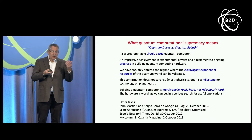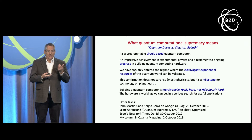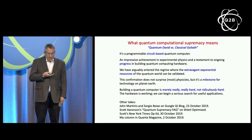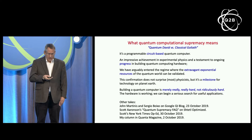While the Sycamore device can generate millions of samples from that distribution in just minutes, for a classical supercomputer to perform a comparable task would take at least days and perhaps longer. This experimentally verifies that the hardware is working as expected, producing meaningful results in a regime where classical simulation is very difficult. It's an impressive achievement in experimental physics and an indication of how quantum hardware is advancing. Arguably, we have now entered the regime where the extravagant exponential resources of the quantum world can really be validated — a milestone worthy of note.